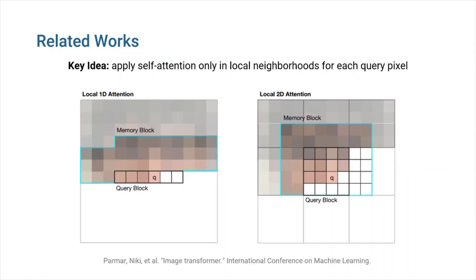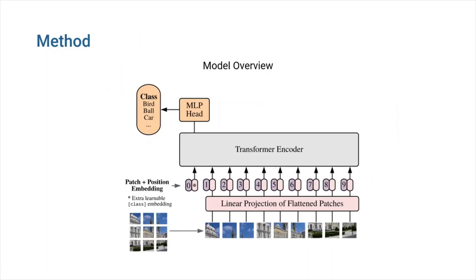To overcome this problem, researchers tried several methods. For example, instead of applying self-attention globally, they applied it exclusively in local neighborhoods for each query pixel. Convolutions could be totally replaced by such local multi-head dot product self-attention blocks. The vision transformer model presented in this paper seeks to be as close to the original transformer model as possible.